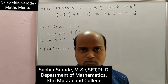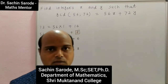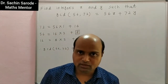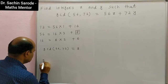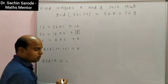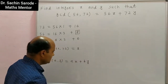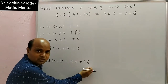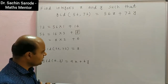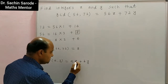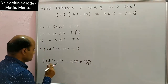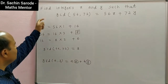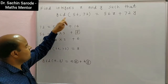Hello friends, myself Dr. Sachin Sarodev. I welcome all of you. In this video, we will learn how GCD of A and B can be written as a linear combination ax plus by, where x and y are integers. We go directly to the problem: find integers x and y such that GCD of 56 and 72 is equal to 56x plus 72y.